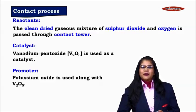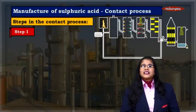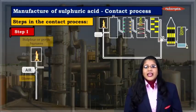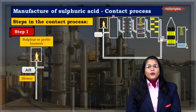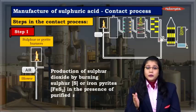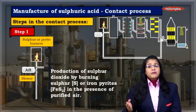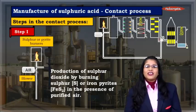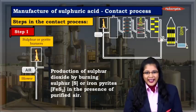Now let us study the first step where we are forming sulphur dioxide. It is done in the first chamber of the entire process, which is the blower and sulphur or pyrite burner. Production of sulphur dioxide is done in this chamber by burning sulphur or iron pyrite. Iron pyrite is FeS₂. They are burnt in the presence of purified air.